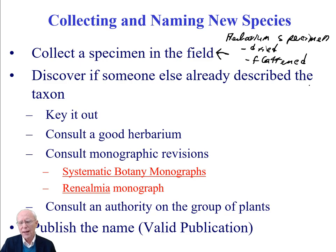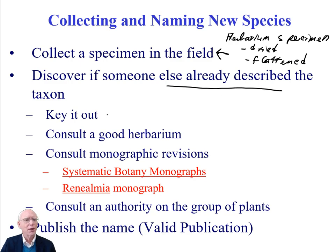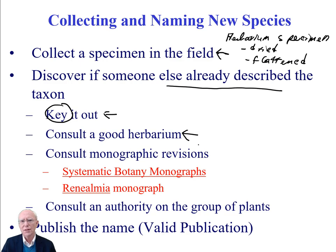So you've got your unknown plant and you've made a collection of it. Now you need to know if someone else has already described this plant or not. Because you're an expert in this area of the world, you're pretty sure they haven't — but you've got to make sure. One thing you might do is use a key to key it out, as we talked about in a previous video. You might get a good key to the region, try to identify it, and if you're not able to, you can also consult a good herbarium — for example, the National Museum in Costa Rica — to compare your specimen with ones already there.